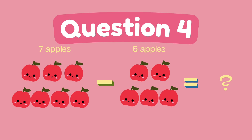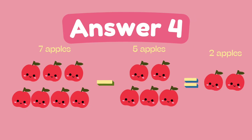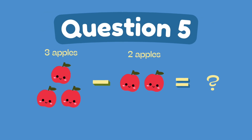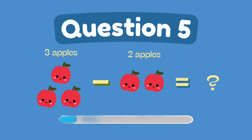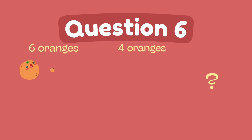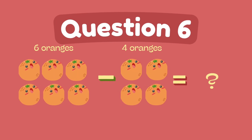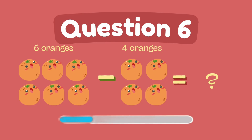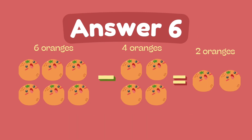What is 7 minus 5? The answer is 2. What is 3 minus 2? The answer is 1. What is 6 minus 4? The answer is 2.